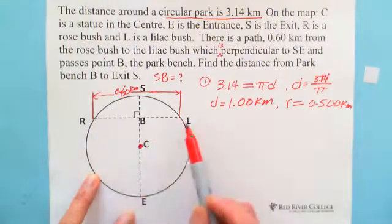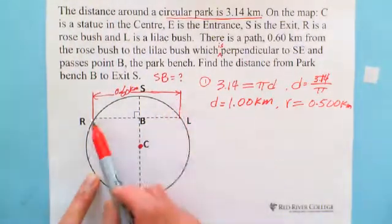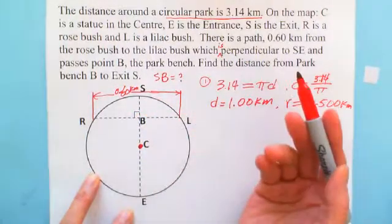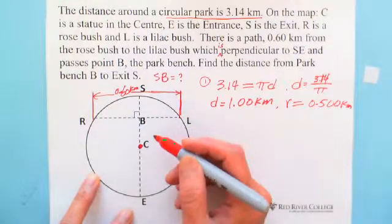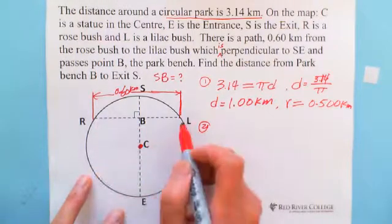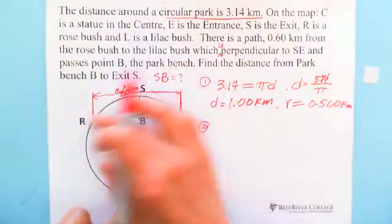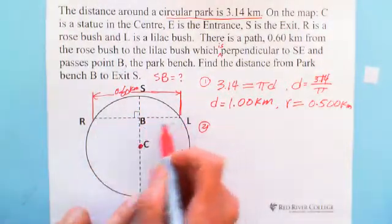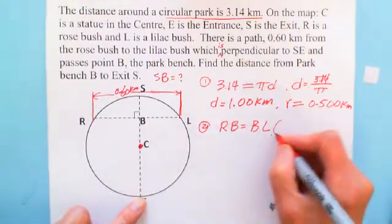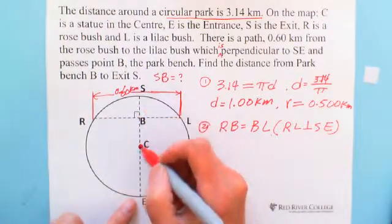The distance between the rosebush and the relic bush is 0.6 km, and the path is perpendicular to SE. This gives us another piece of information. From circle geometry, if a chord RL is perpendicular to a diameter or radius, it will be cut into two equal parts — meaning RB equals BL.